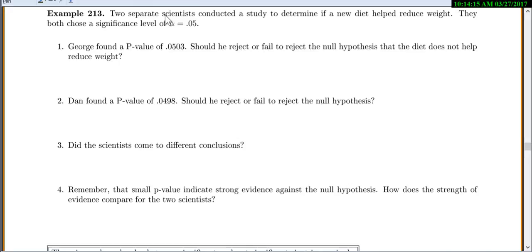So our next situation, we have two separate scientists conducted a study to determine if a new diet helped reduce weight. They both chose a significance level of 0.05. Now George found a p-value of 0.503. Should he reject or fail to reject the null hypothesis that diet does not help reduce weight? So they both used alpha equals 0.05, so this p-value is a big p-value. It's bigger than 0.05. And so he will fail to reject the null.